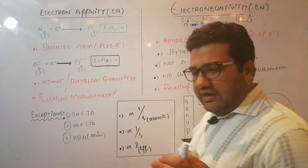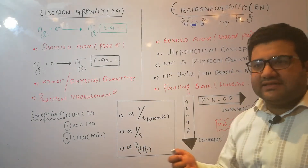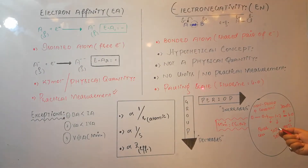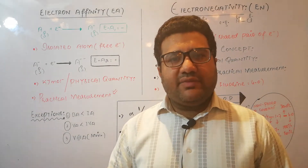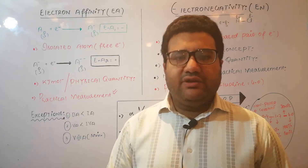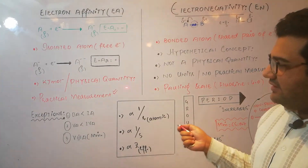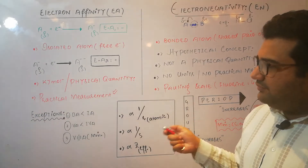Electronegativity is not a physical quantity — it has no units and no practical measurement. It is essentially a theoretical concept, a convention devised by Pauling. The electronegativity scale is decided based on the Pauling scale, which takes fluorine as the standard with the maximum electronegativity value of 4 — a dimensionless quantity. In contrast, electron affinity is a physical quantity with practical measurability, and its units are kilojoules per mole.